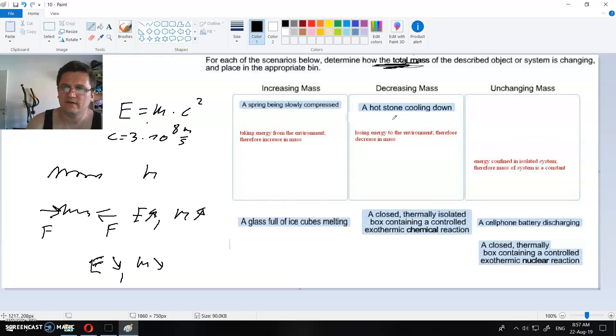Decrease in mass is evident in nuclear reactions because nuclear force is very strong. So it's easy to see there. What about unchanging mass? If we have an isolated system that is isolated from the environment, then its mass will remain constant, like this one: a closed thermally isolated box containing a controlled exothermic chemical reaction.